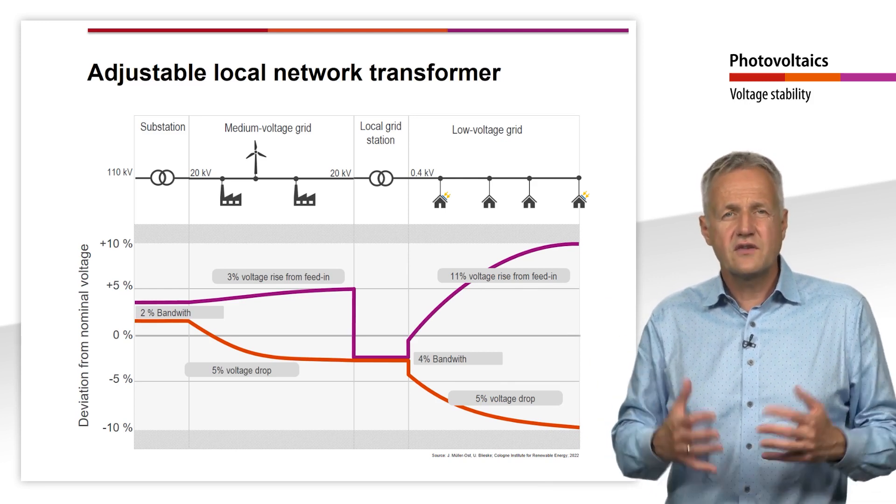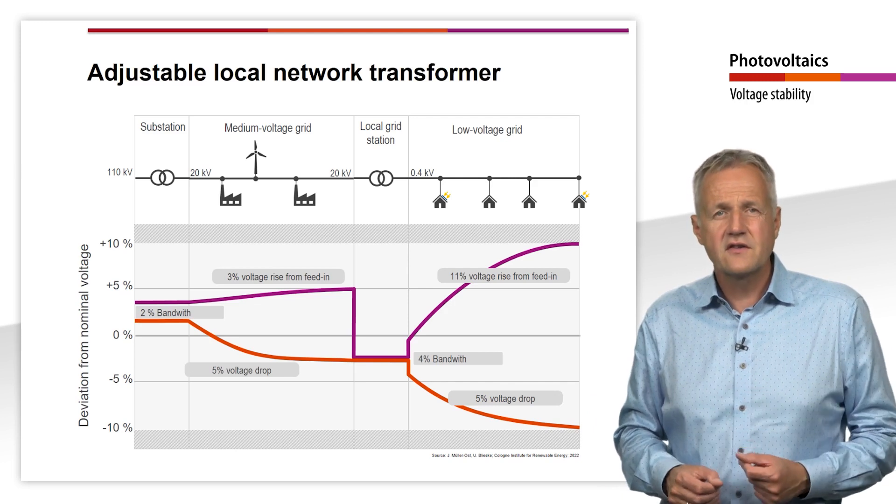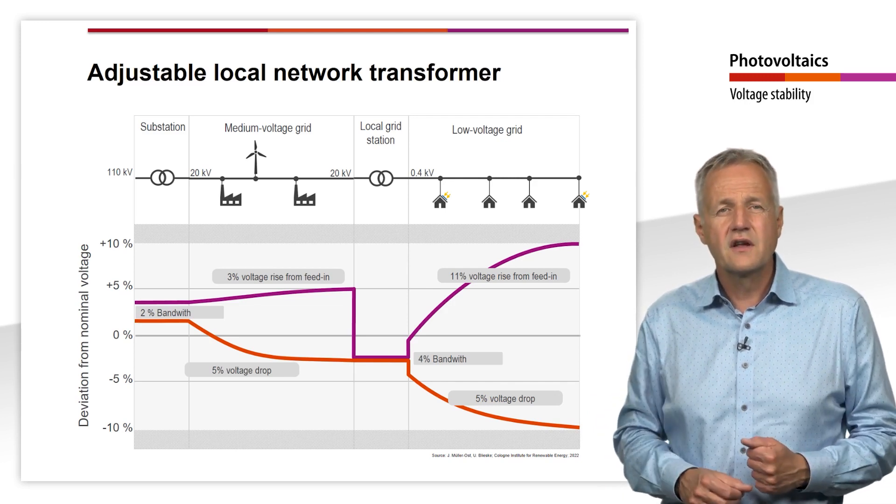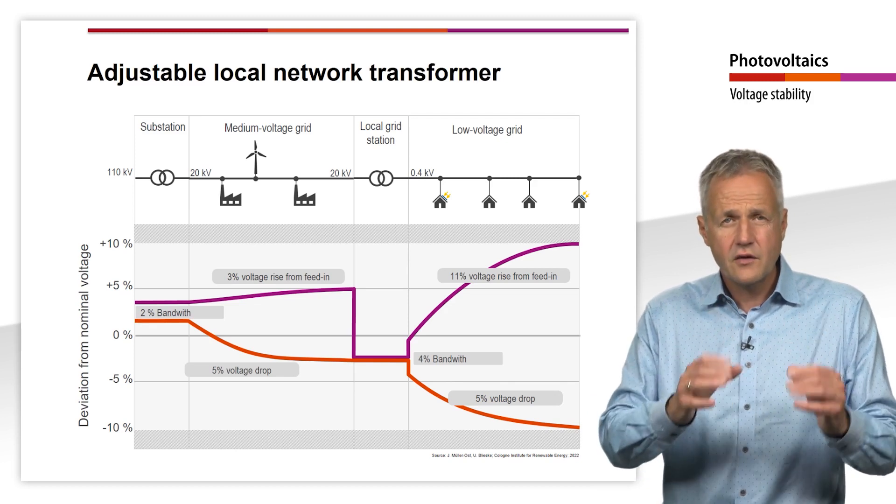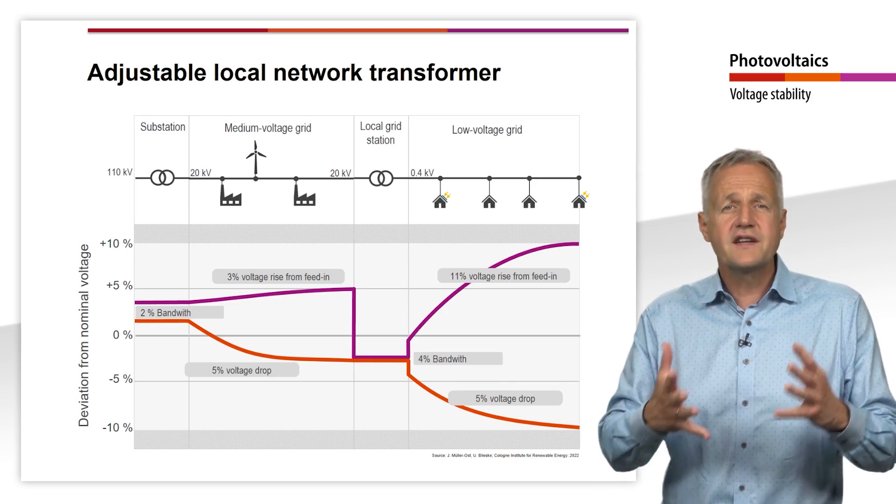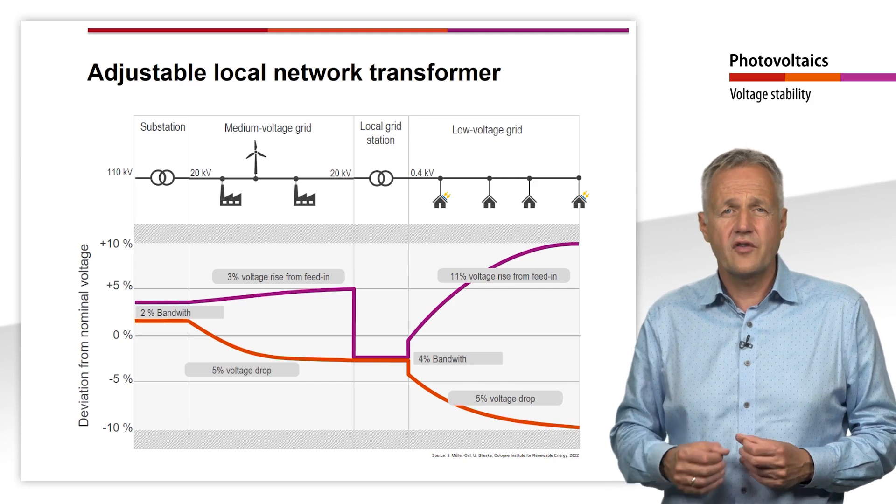This reduces the reactance and resistance at the connection point. In addition, grid operators can replace the fixed local grid transformers with adjustable local grid transformers.